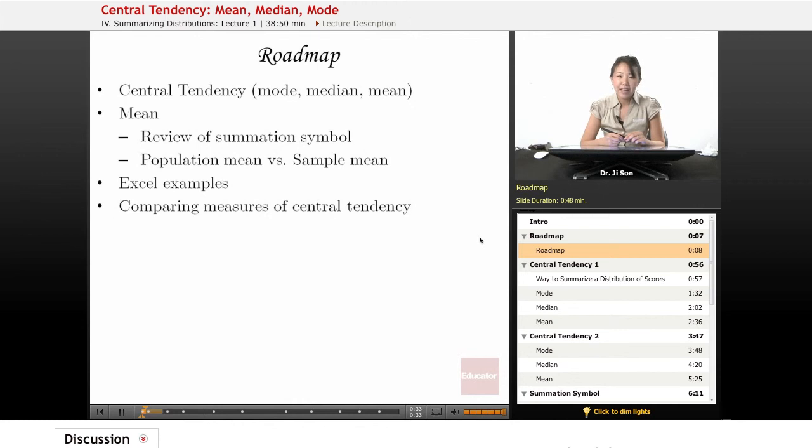We're going to be talking about these three measures of central tendency. Then we're going to spend a little bit more time on mean. We're going to review the summation symbol, sigma, uppercase sigma. And then we're also going to talk about the different formulas for population mean versus sample mean. Then we're going to talk about some Excel examples, and finally, we're going to compare these measures of central tendency.